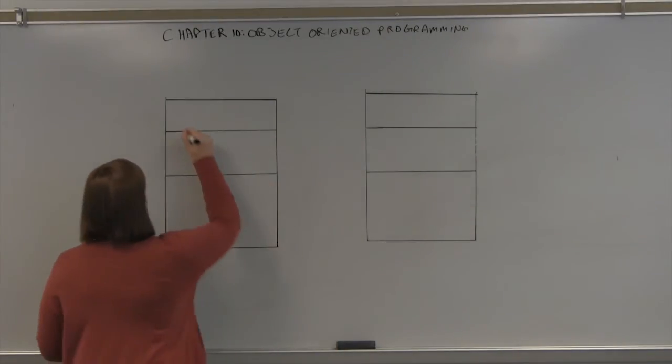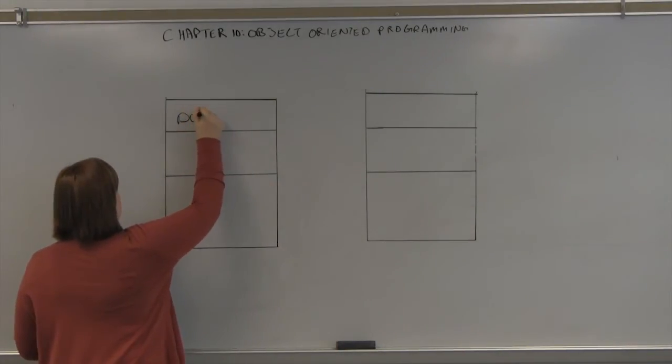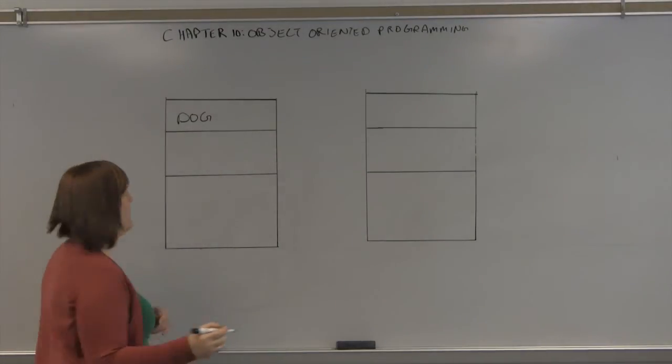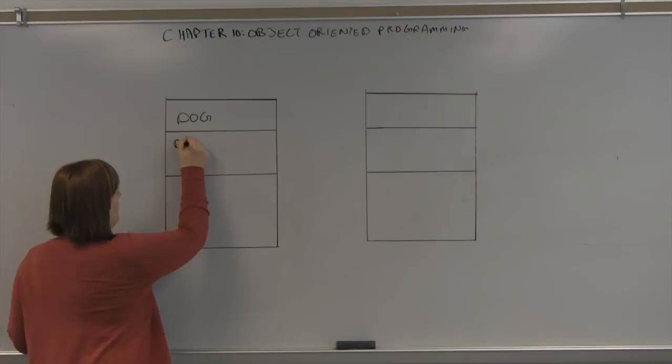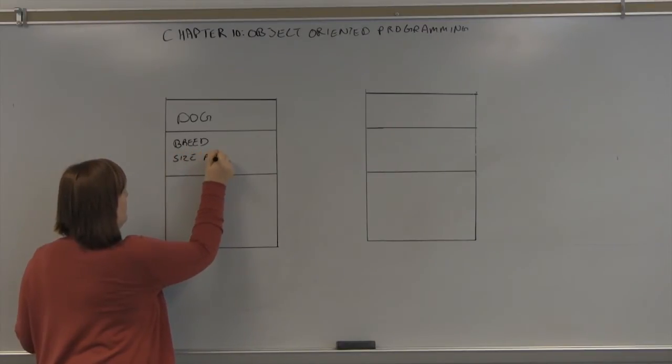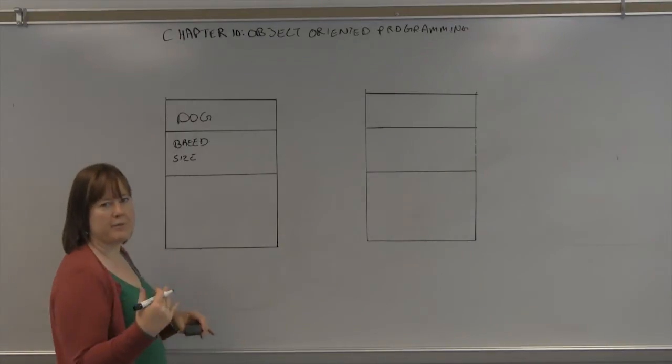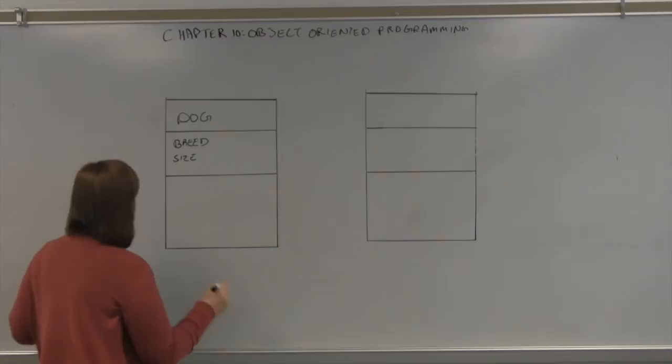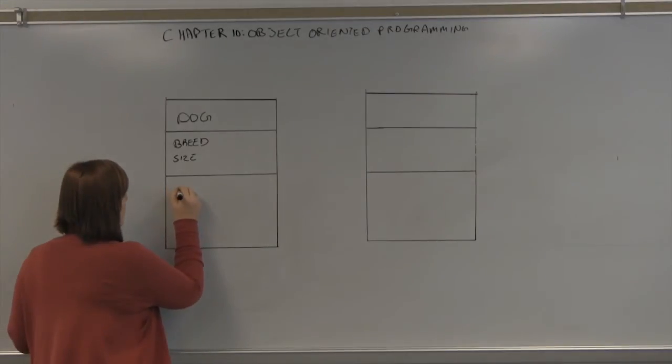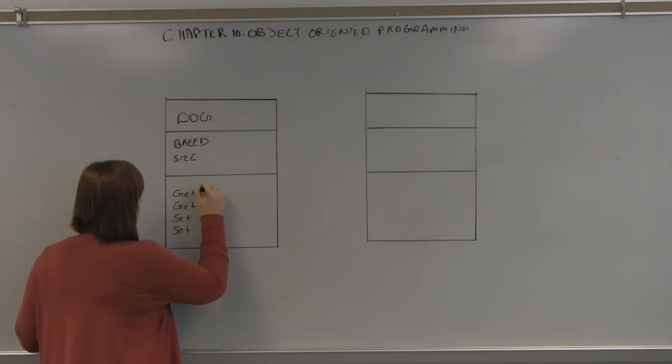Generically, if we have a dog class, my dog will have certain attributes. It will have a breed attribute. It will have a size attribute. It will have other attributes. But we're going to keep it simple. And if we were going to do some sort of programming about our dog, we would be able to get and set breed and size.